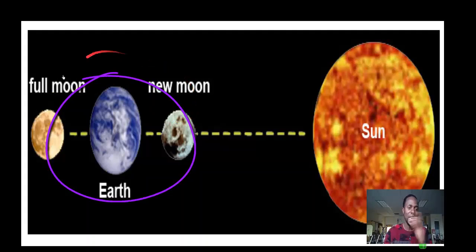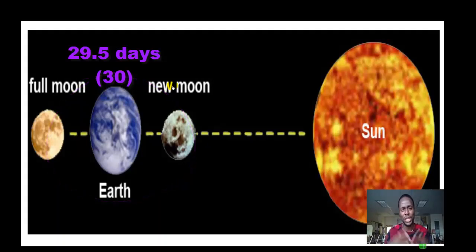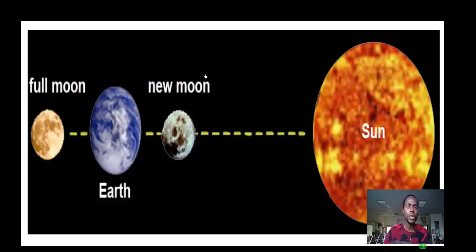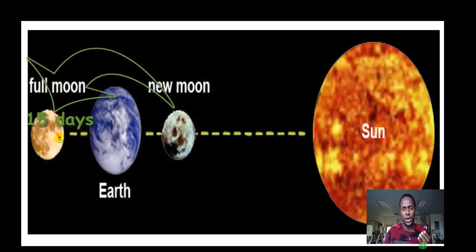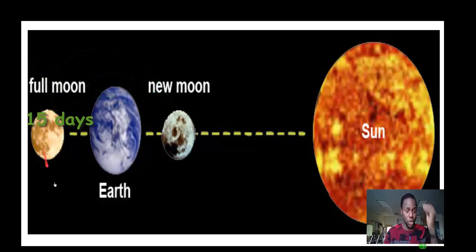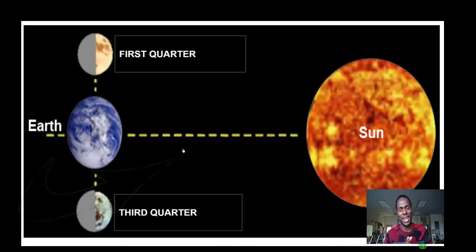It takes the moon exactly 29.5 days to go around the Earth. Let's approximate that to 30 days for easy calculation — that's why most calendar months are 30 days. From new moon to full moon is 15 days, which is half of the moon's journey around the Earth. Then from full moon back to the next new moon is another 15 days.